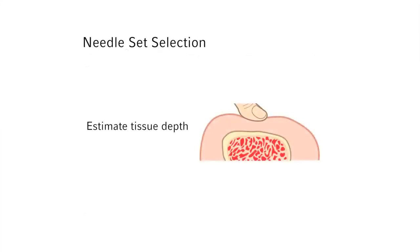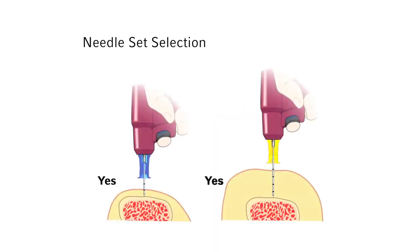Press your thumb or finger over the insertion site to estimate the depth of soft tissue. With the needle set tip touching the bone, the 5 mm mark must be visible above the skin for confirmation of adequate needle set length prior to drilling.